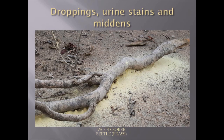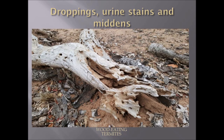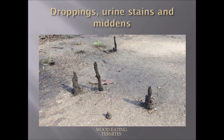Here we have frass or sawdust from the wood-borer beetle once again. Here we have wood-eating termites feeding on wood — they make clay tunnels to protect themselves from the sun and from predators. These are also the launching platforms of wood-eating termites, which fly off to mate during their mating or nuptial flights.